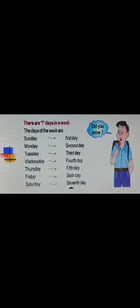Did you know there are 7 days in a week? The days of the week are Sunday, which is the first day; Monday is the second day; Tuesday is the third day; Wednesday is the fourth day; Thursday is the fifth day; Friday is the sixth day; and Saturday is the seventh and last day of the week.